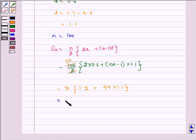Which equals 50 multiplied by 1.2 plus 108.9, which equals 50 multiplied by 110.1, which equals 5505.0.